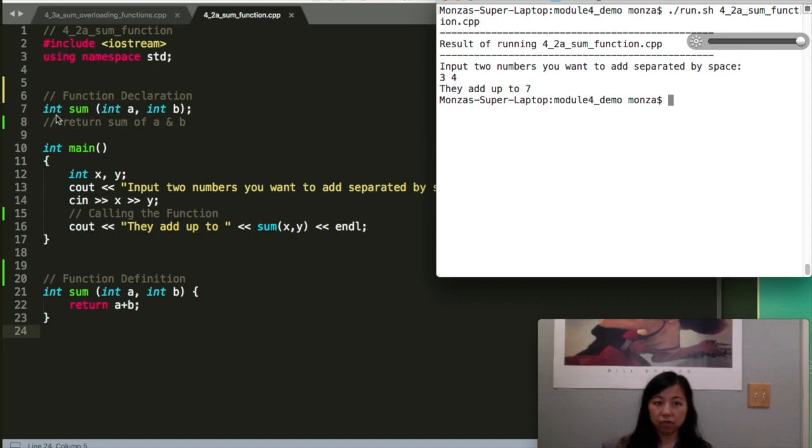So the declaration will say, hey, I expect that I would have two numbers, a and b, and both of them are integers. And then I will return an integer. And then in the definition, it will talk about the details about how this function is implemented. So basically, this is very simple, we just add a to b, and then return it. That's it.